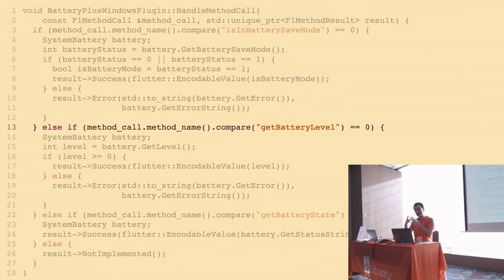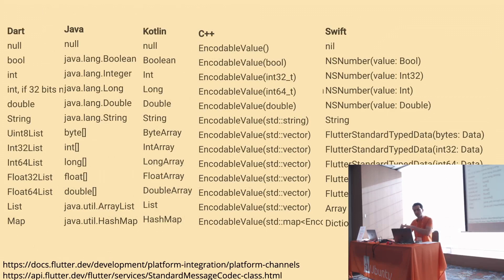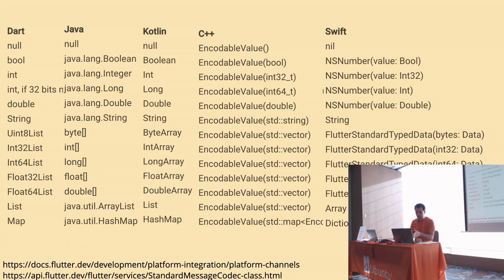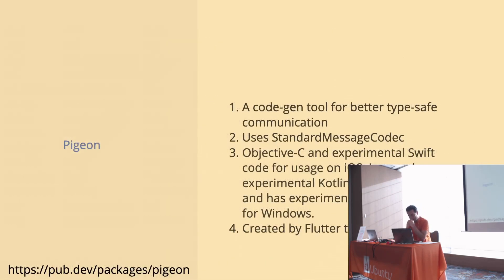One more important thing: when we are sending these messages between the Dart layer and native code, there are message codecs — standards that are supported by Flutter or the Dart layer automatically for different languages. Here's an example of things you don't need to really care about because they're automatically covered. However, when you start building a plugin, you'll reach a case where the primary types are not enough and you need to create your own custom types and classes to communicate with the native layer.